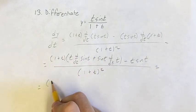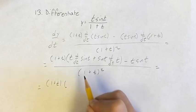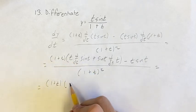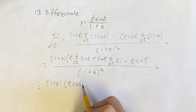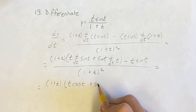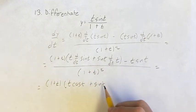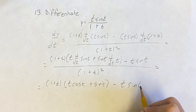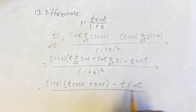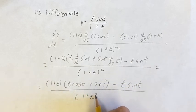So just simplifying this, we have 1 plus t times t cosine t, since the derivative of sine t is cosine t, plus sine t, and the derivative of t is just 1. So we have this minus t sine t, all over 1 plus t squared.